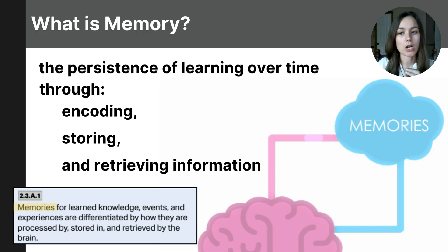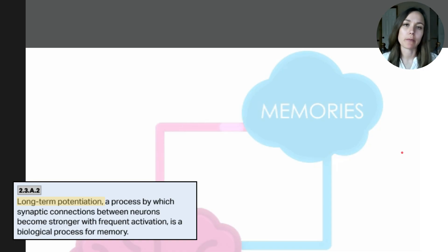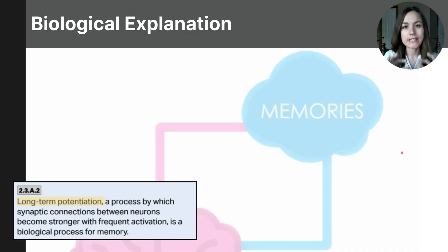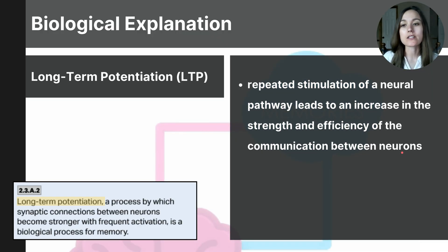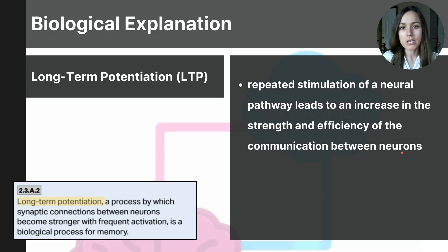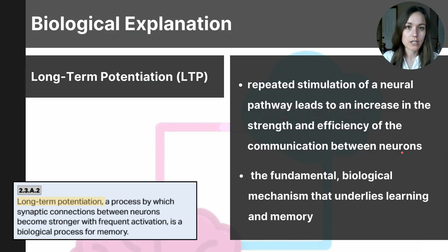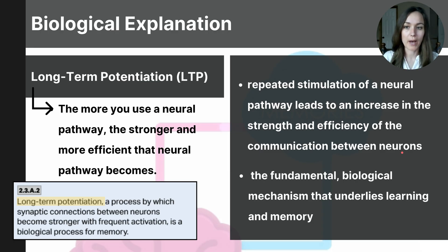Today's video lesson will focus on some of the approaches that help us better understand and explain what memory is. First, I want to talk about memory on a biological level, specifically what's happening in the synapses. You need to know a term called long-term potentiation or LTP, which is the process by which repeated stimulation of a neural pathway leads to an increase in the strength and efficiency of communication between two neurons. LTP means that the more you use a neural pathway, the stronger and more efficient that neural pathway becomes.